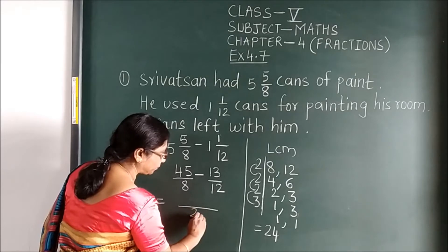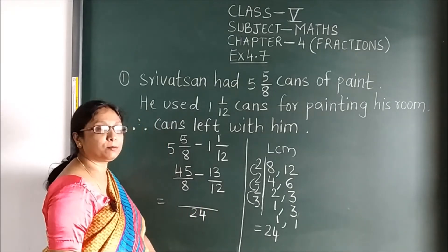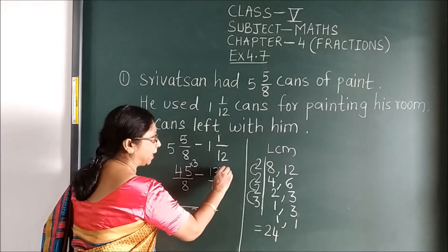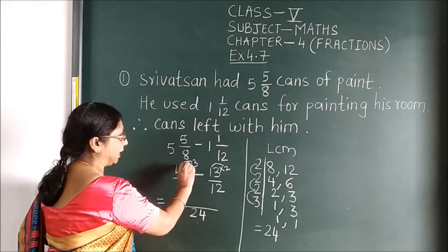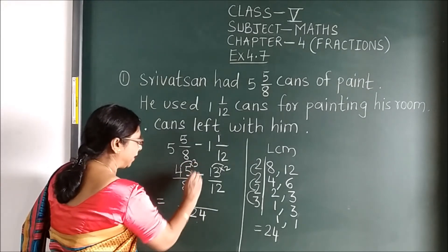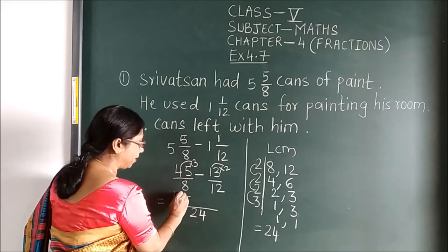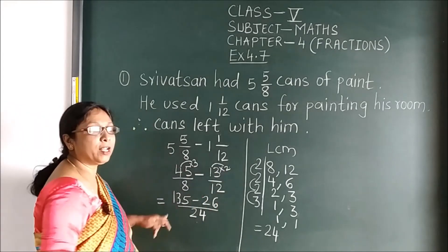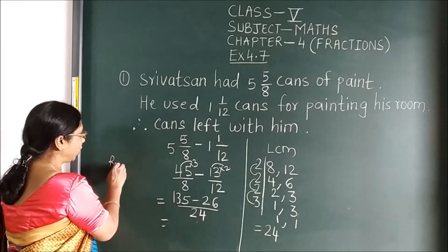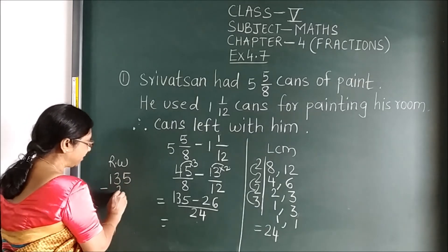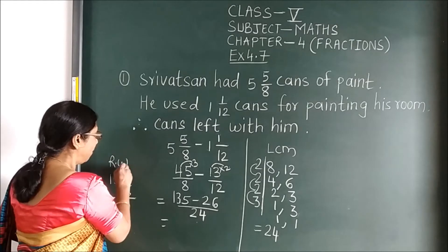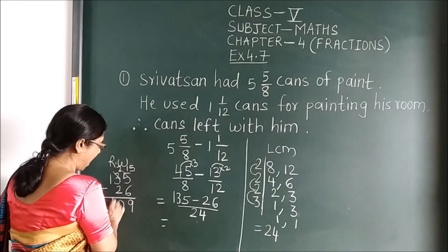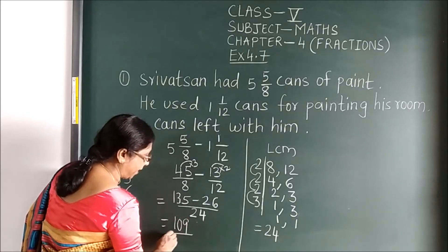Now write the LCM 24 as the denominator. For 45/8: the 8 times table gives 3 to reach 24, so multiply the numerator by 3 — 45 × 3 = 135. For 13/12: the 12 times table gives 2 to reach 24, so multiply by 2 — 13 × 2 = 26. Now carry out the subtraction: 135 minus 26 equals 109. So you get 109/24.